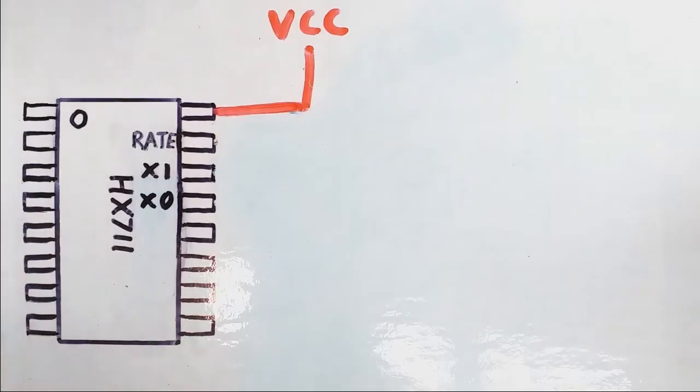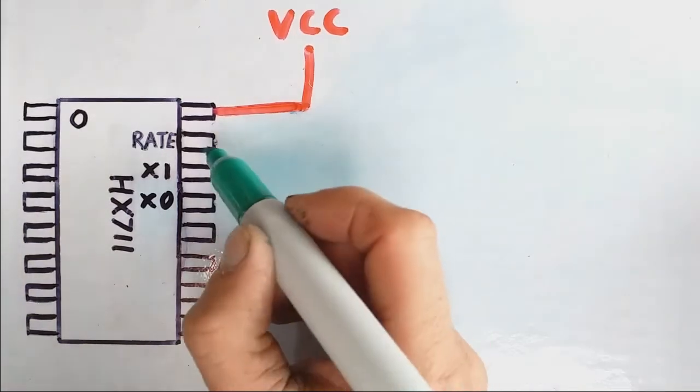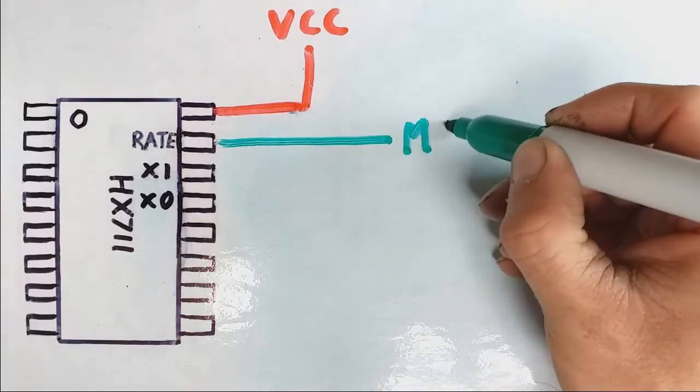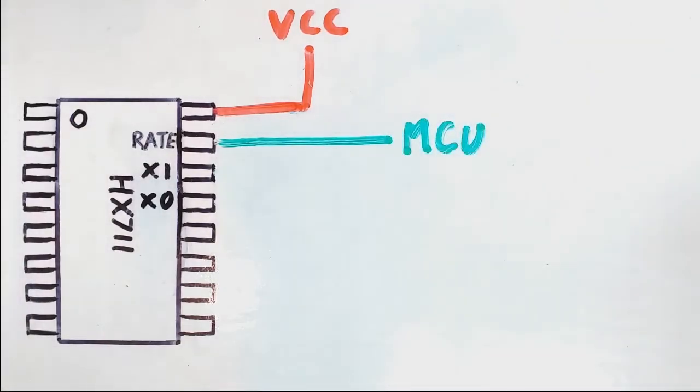And a bonus tip: you can connect this rate pin to the digital output of a microcontroller if you want to change between two different sample rates using code.